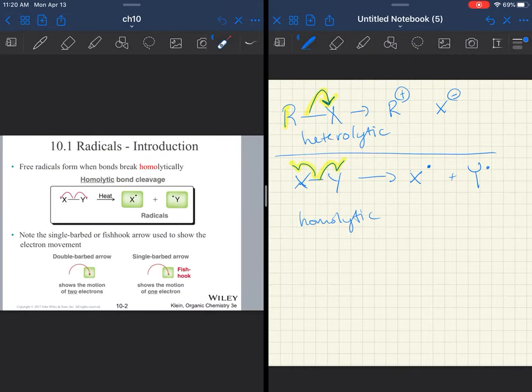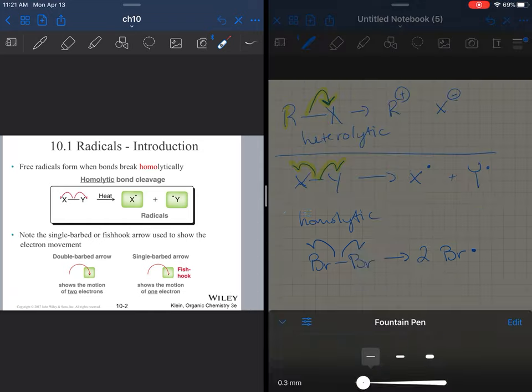This produces radicals. A radical doesn't have a charge, but it has an unpaired electron.